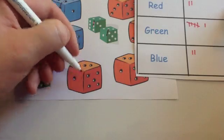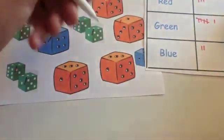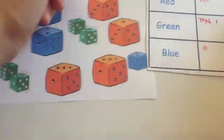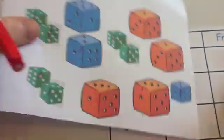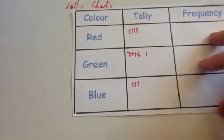Alright, that was green. Red, red, red, red, and blue. So as you can see, we've crossed them all off on the original data like so, and we've put them all into the tallies.